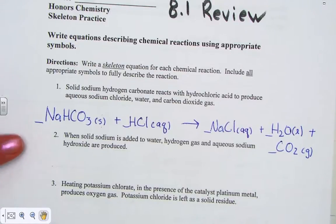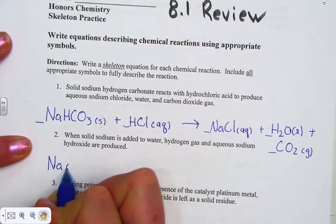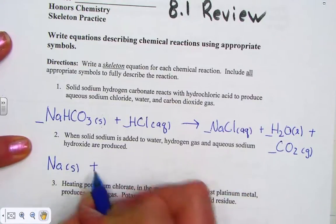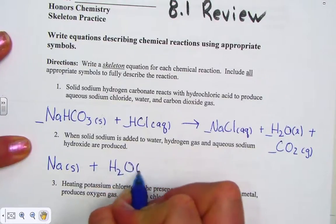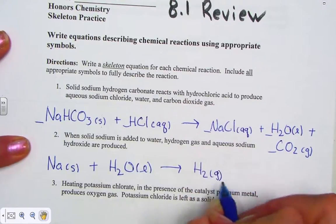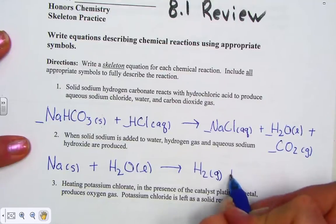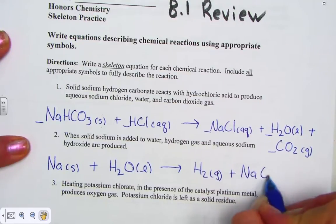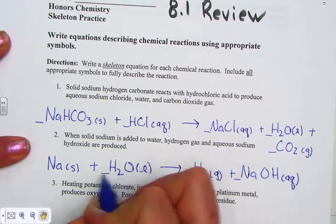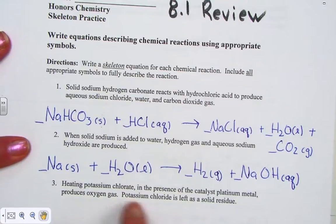Let's read two. When solid sodium is added to water, hydrogen gas and aqueous sodium hydroxide are produced. Solid sodium, Na, with an S for the state of matter, is added to water in the liquid phase. Hydrogen gas is produced, H2, because it's a molecular compound. Sodium hydroxide, NaOH, aqueous. Again, not balanced, but we have a skeleton in place where the reactants are forming products.